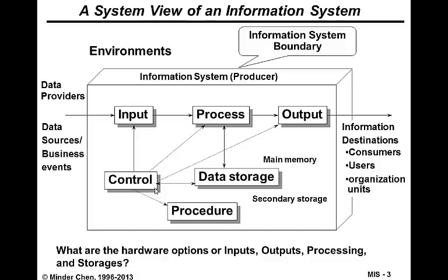There are two other components in this model. One is the control component, which ensures the quality of our information system. For instance, we want to make sure the data coming into the system is of high quality. We don't want the so-called garbage in, garbage out — the GIGO phenomenon. With good quality data coming into the system, the output will be more trustworthy.